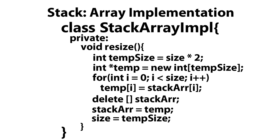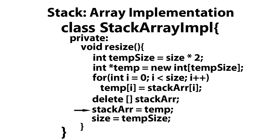Now let's take a look at our resize method. The resize method is invoked whenever our stack is full. First, 'temp size' is going to be essentially double the previous size of our old array. Next, we create the new array that's double the size. Then we go through a for loop that copies all the data from our old array into the new array. Then we delete our old array and set stack array equal to the new array we just created. And then size is updated to the new size.